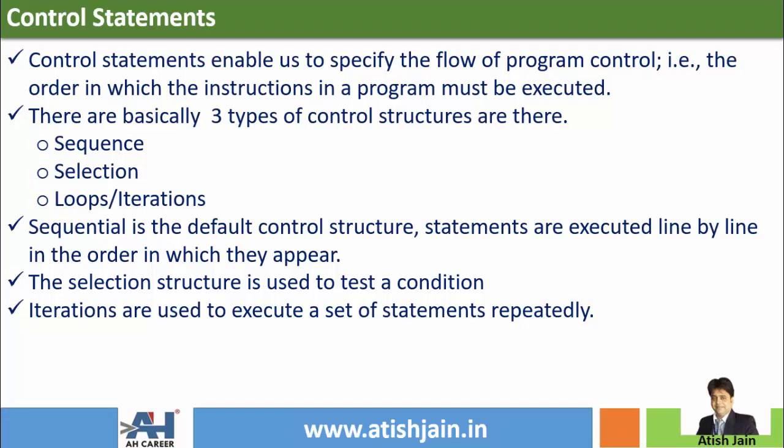The selection structure is used to test a condition. The loop or repetitions are iterations. I will explain all three control structures. Let's look at examples in C language — 20 to 30 examples — so we can see the C++ logic.